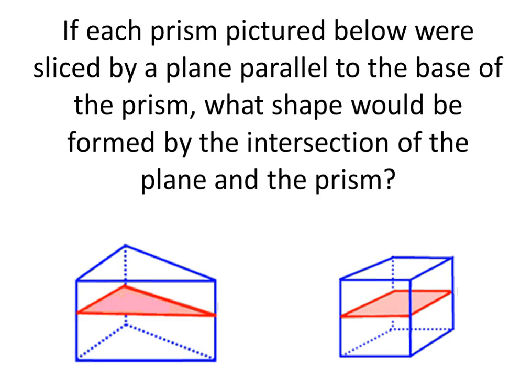What shape would be formed by the intersection of the plane and the prism? So first here, I have a triangular prism. So the bases are triangles. And so if we were to slice it parallel to the triangles, the shape that would be formed by the intersection of the plane and the triangular prism would actually be that shape in red, which is a triangle. So the cross-section would be a triangle.